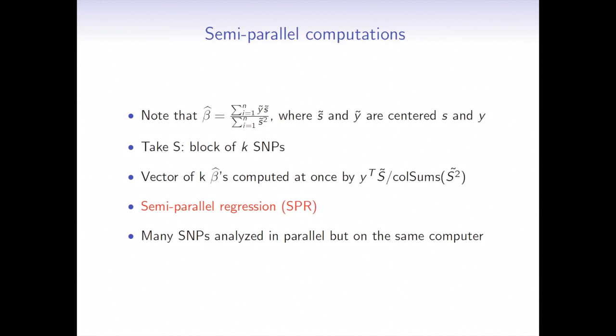So imagine that we want to take a block of SNPs. I take k-SNPs at one time. And this operation of the beta can be done using matrix operations. So if I multiply transpose vector of y's with the whole matrix of the centered SNPs, I can get my whole vector of betas using one matrix multiplication. And that's what we call semi-parallel regression. So we also get many betas in parallel, but on the same computer using the same R session.